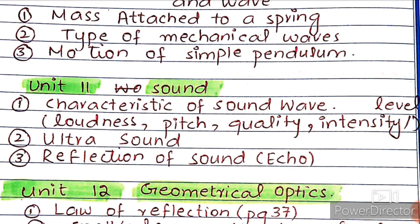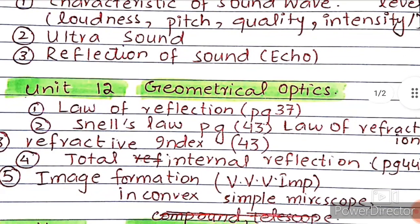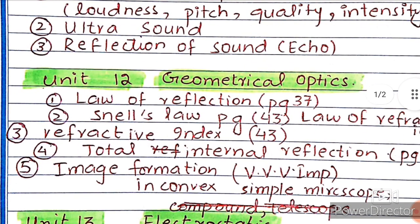Third is reflection of sound, which is echo. Then our next chapter is chapter 12, Geometrical Optics. We have five important topics. First is law of reflection, which is three points on page number 37, and Snell's law.